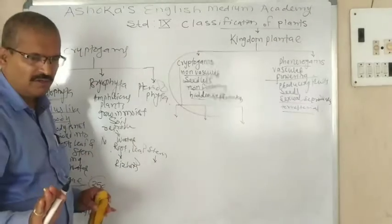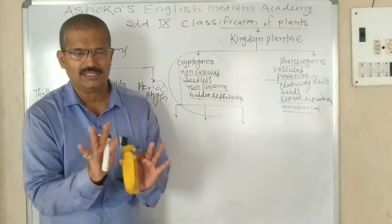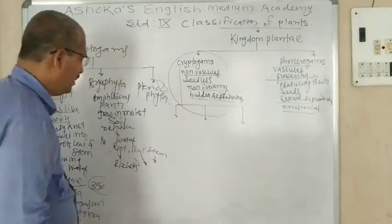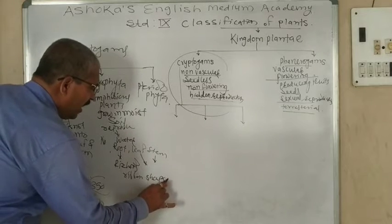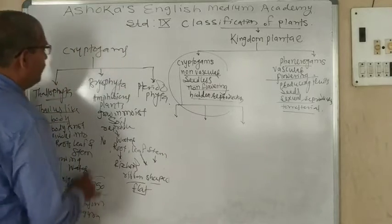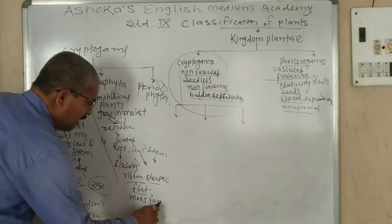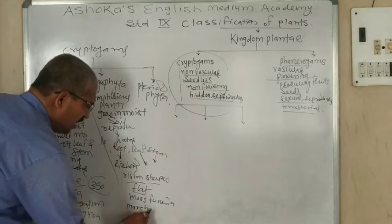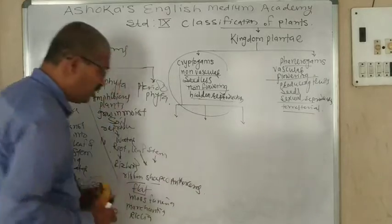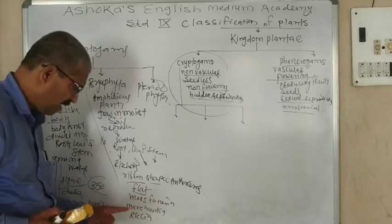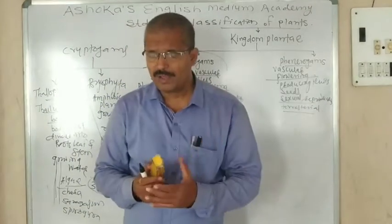There are rhizoids — root-like structures. There is also a stem-like structure, but it is not a true stem. Somewhere you can see leaf-like structures, but these are not true leaves. Bryophyta are ribbon-shaped with a flat body. Examples are moss (Funaria), Marchantia, Riccia, and Anthoceros — these are the four examples given in the textbook.